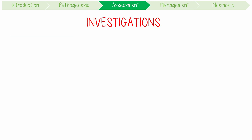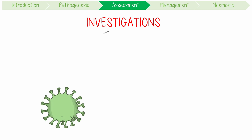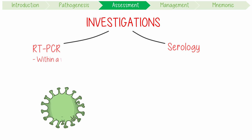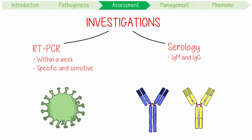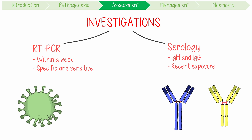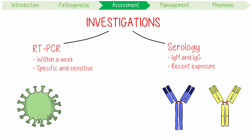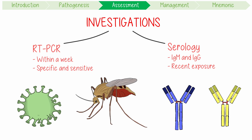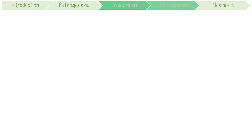When investigating for Chikungunya, diagnosis can be made by detecting viral RNA with reverse transcription PCR or serology. For individuals presenting within a week of symptoms, RT-PCR is highly specific and sensitive. Serological IgM and IgG testing is preferable after this period. More broadly, testing for dengue and Zika virus infections should also be pursued because they are great mimics of acute infection.